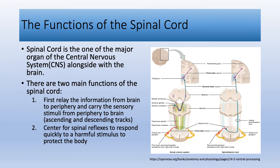The spinal cord has two main functions: relaying information from the brain to the periphery and carrying sensory information from the periphery to the brain. Secondly, it is a center for spinal reflexes to respond quickly to harmful stimuli to protect the body.